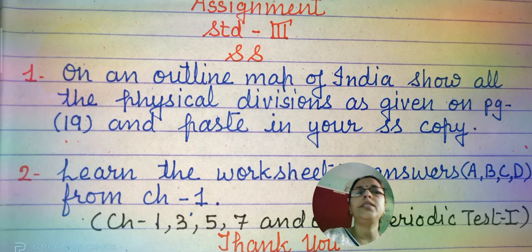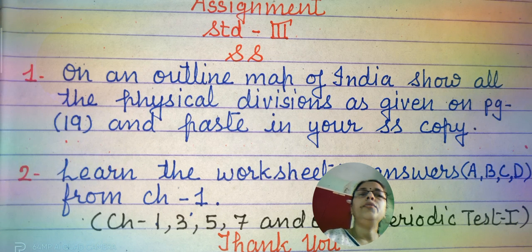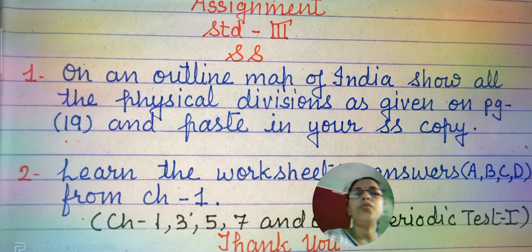As you know there are 6 physical divisions. You have to show all the physical divisions and no need to worry, it is given on page number 19. Paste that map in your SS copy.